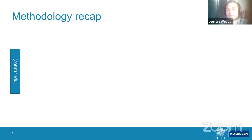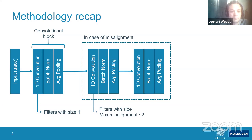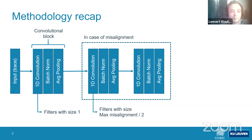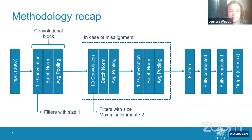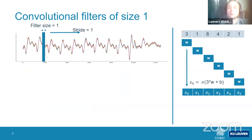A quick recap of the revisited methodology: a CNN takes side channel traces as input, feeds them into a first convolutional block where the filter size is set to 1 — an unconventional choice — then if misalignment is present, adds another convolutional block with filter size equal to half the maximum misalignment. Finally, flattened and fully connected layers lead to an output classification layer.